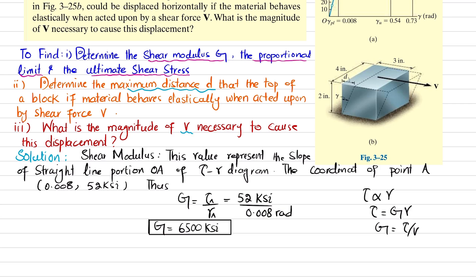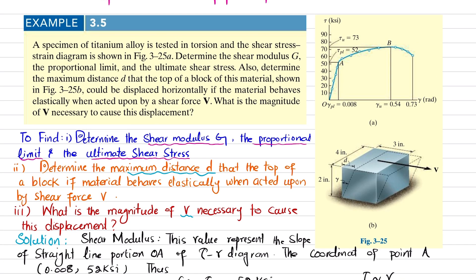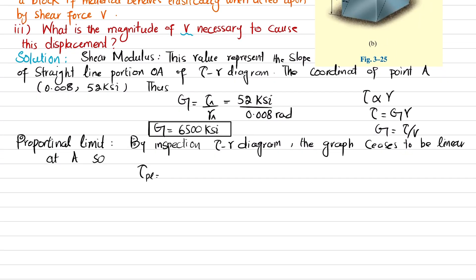Now we will find the proportional limit — this is the limit beyond which the material will not behave elastically. By inspection of the shear stress and shear strain diagram, the graph ceases to be linear at point A. Therefore, the shear stress at the proportional limit is 52 ksi.